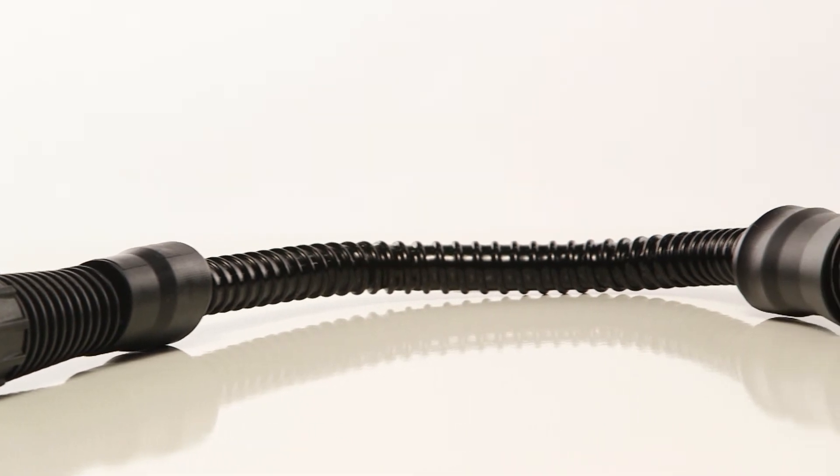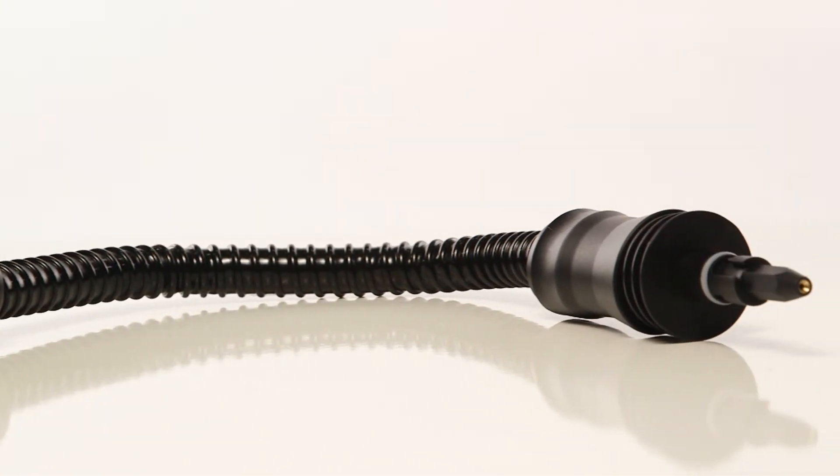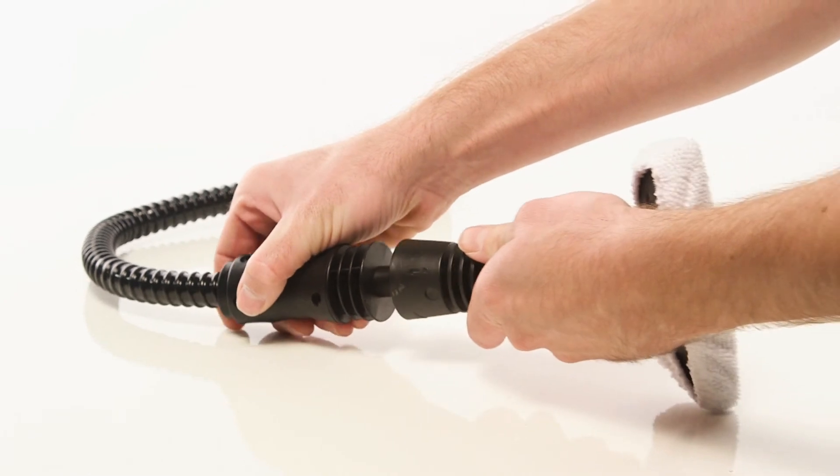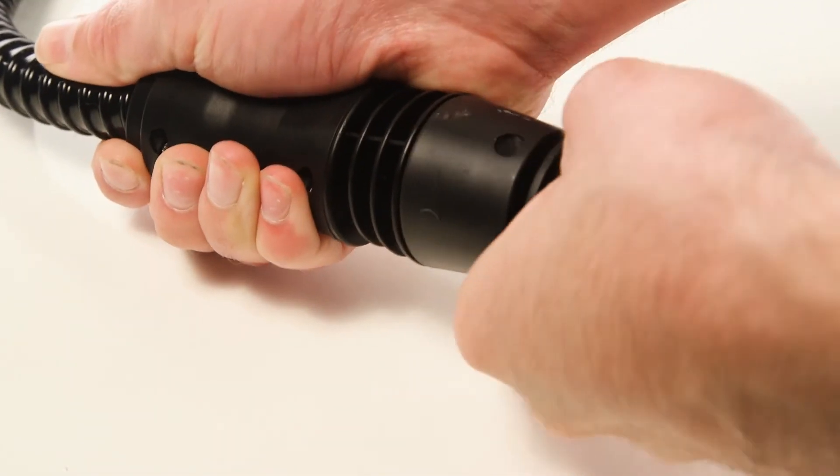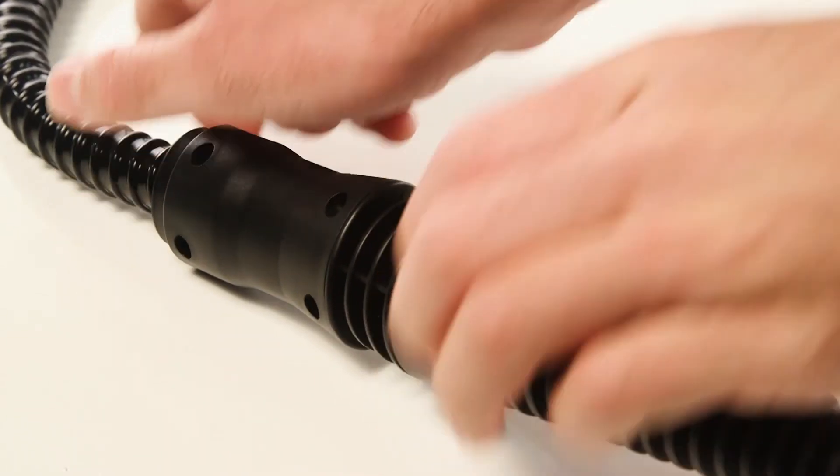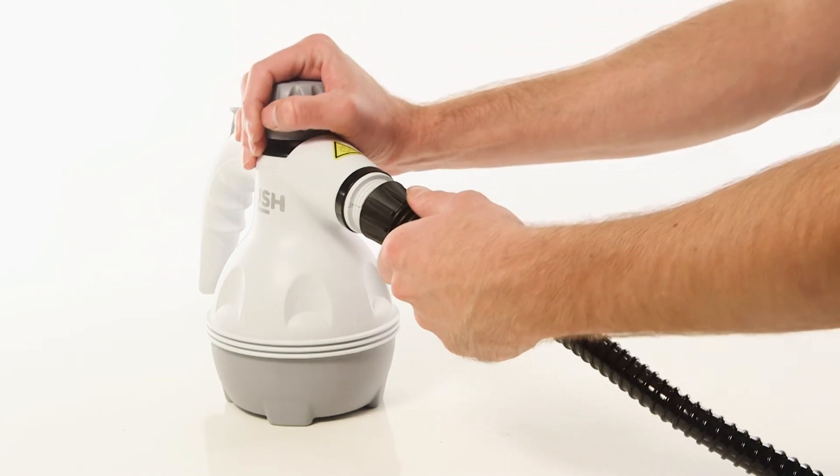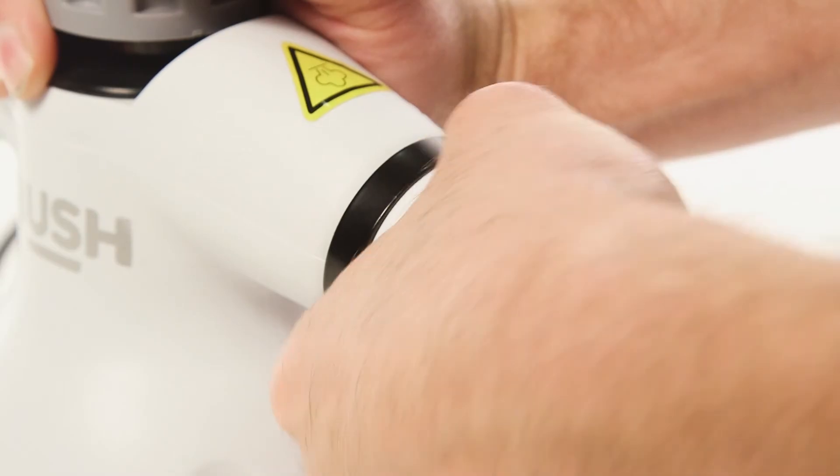Finally, an extension hose is also included. Attach the utility nozzle to the extension hose by pressing it up to the rubber seal and rotate it clockwise. You can then repeat this process to attach the extension hose to the steam cleaner.